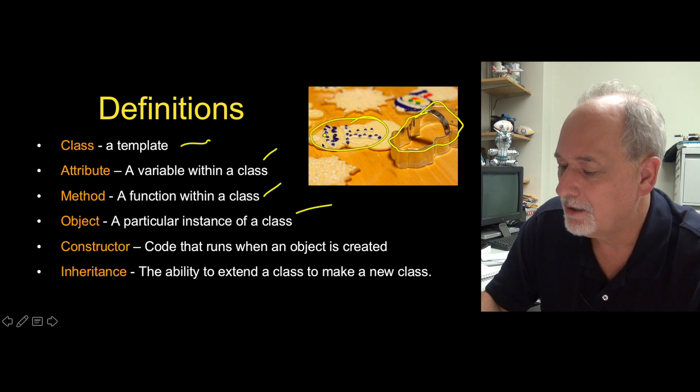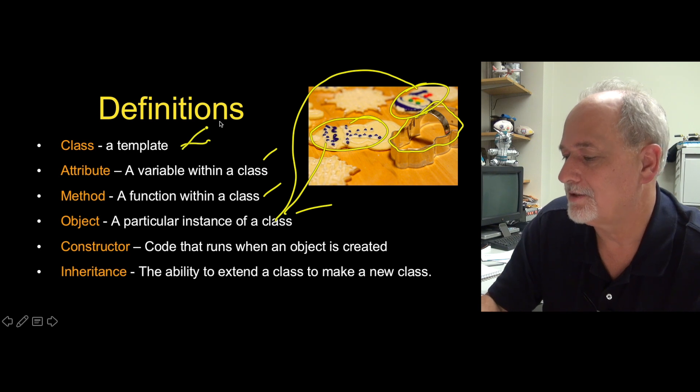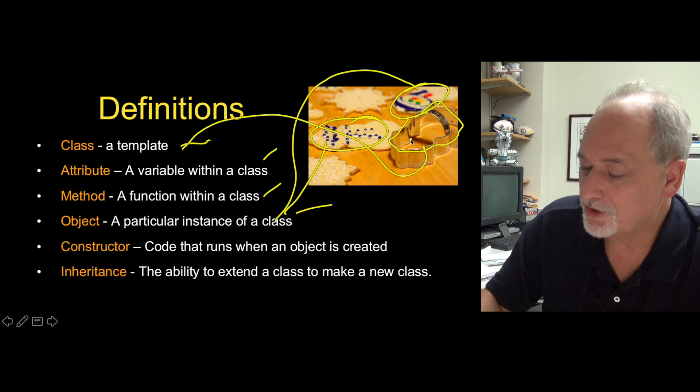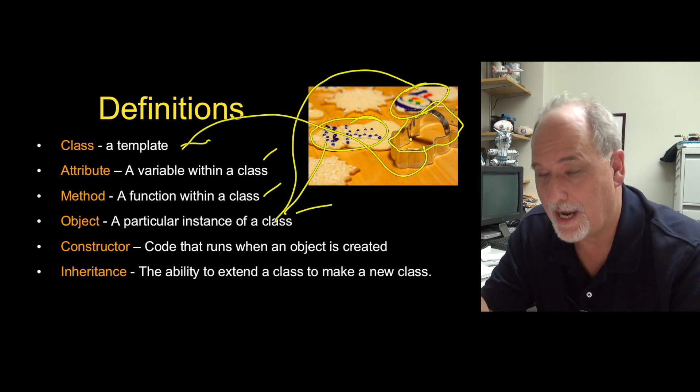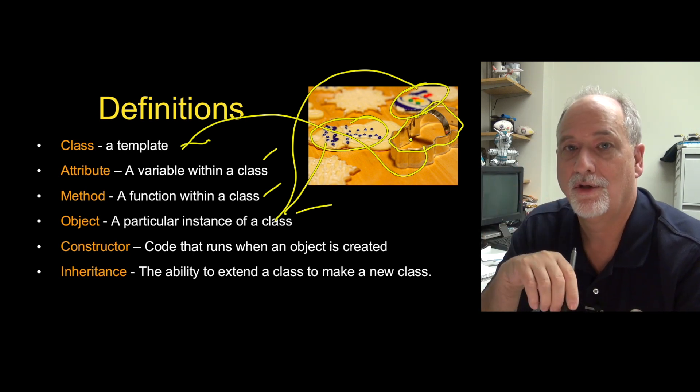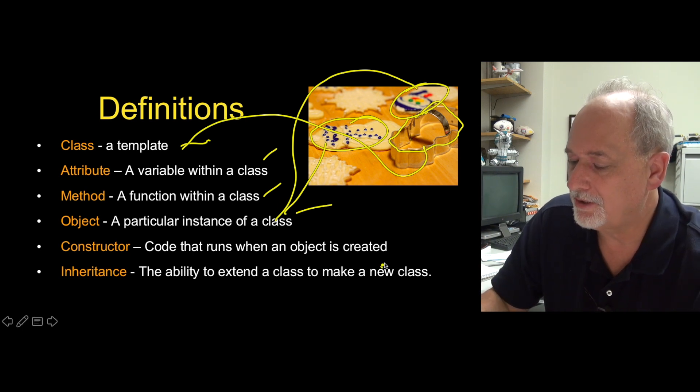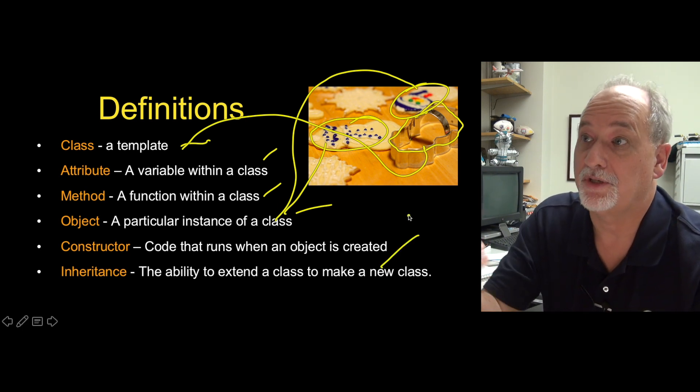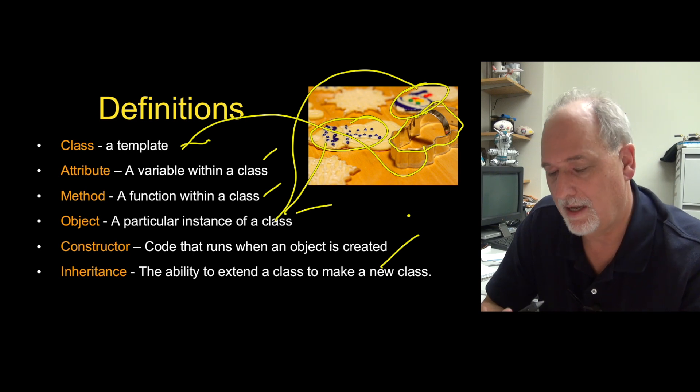Object is once we construct a class, we get back an object. And so object here is the snowman cookies. Class is the snowman cookie cutter. And a constructor is a bit of code that sets up our object, our instance, when it first is created. And inheritance is this ability to create a new class, but take all and import and affect all the capabilities of an existing class.